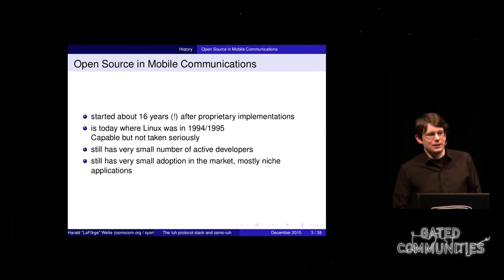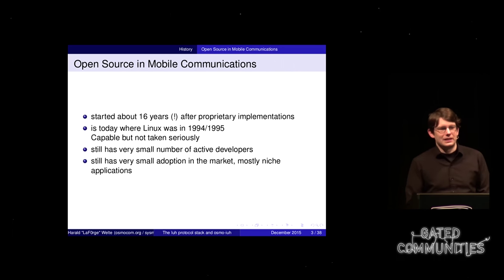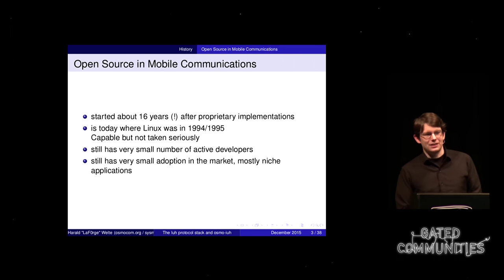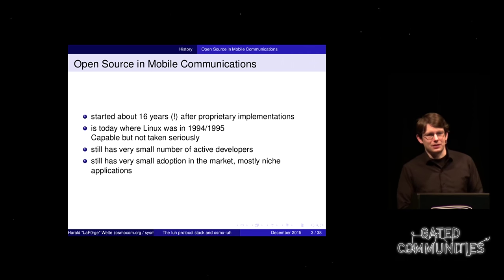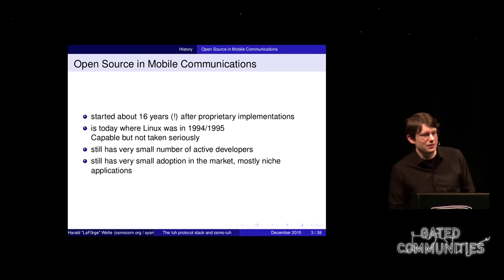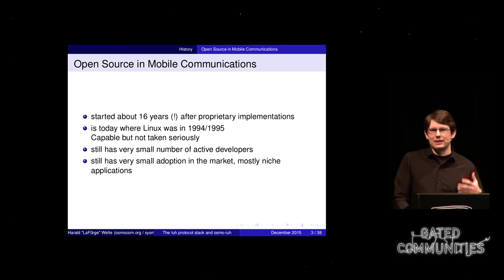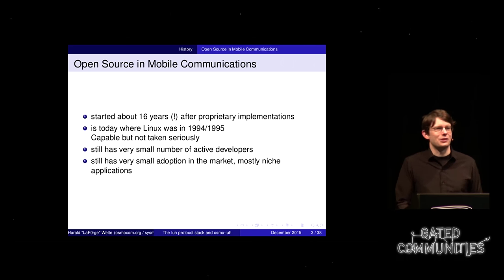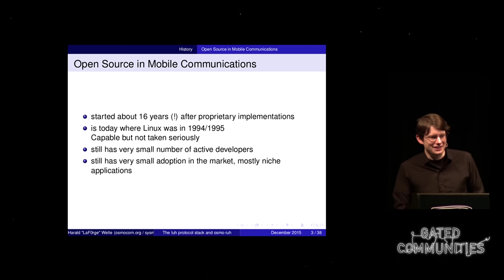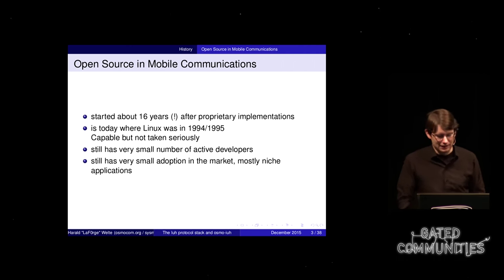Let's start with a little history of open source and mobile communication protocols. We started about 16 years after the proprietary implementation — the GSM network we run here started 16 years after GSM networks first ran publicly in Europe. If you want to compare the status of open source mobile communications with open source operating systems, I would say we are about where Linux was in 1994 or 1995: capable but not taken seriously. The developer community is still very small, with limited adoption and users often in niche applications.